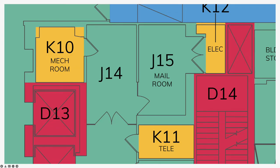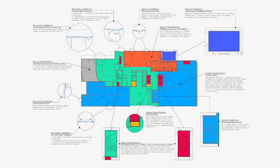This is a diagram we produce to show different types of conditions that exist on a floor plan and how we measure them — door setbacks, unenclosed areas, how we handle columns — which you can reference later.